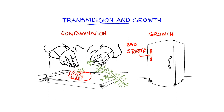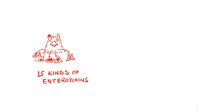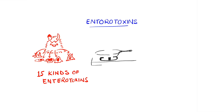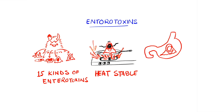Staphylococci produce about 15 kinds of enterotoxins, and about 50% of Staphylococcus aureus species produce these enterotoxins. These enterotoxins are exotoxins but are also superantigens, just like the other exotoxins — TSST-1 is a superantigen, and similarly the toxin for Scalded Skin Syndrome is a superantigen. Importantly, these enterotoxins are heat-stable and resistant to the digestive action of gut enzymes, so they actually survive in the gut to cause their ill effects.